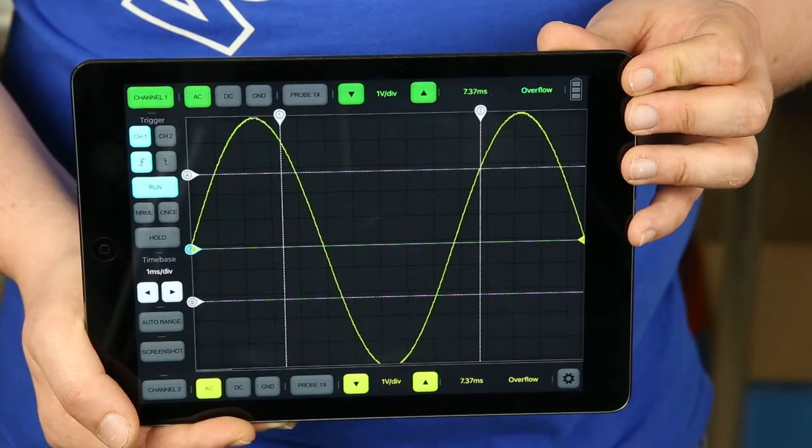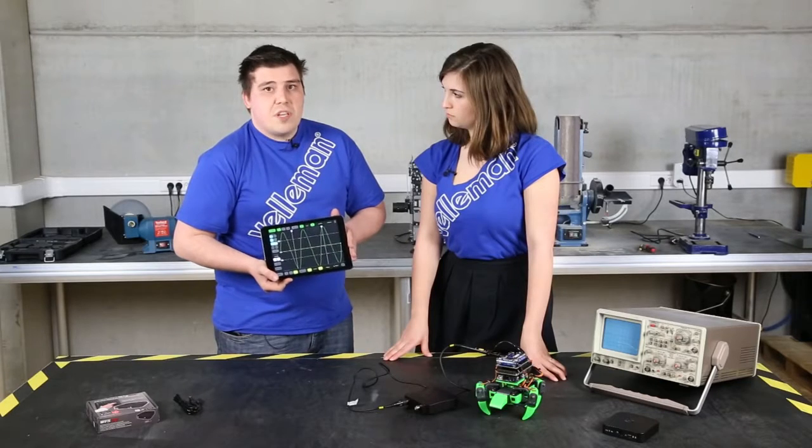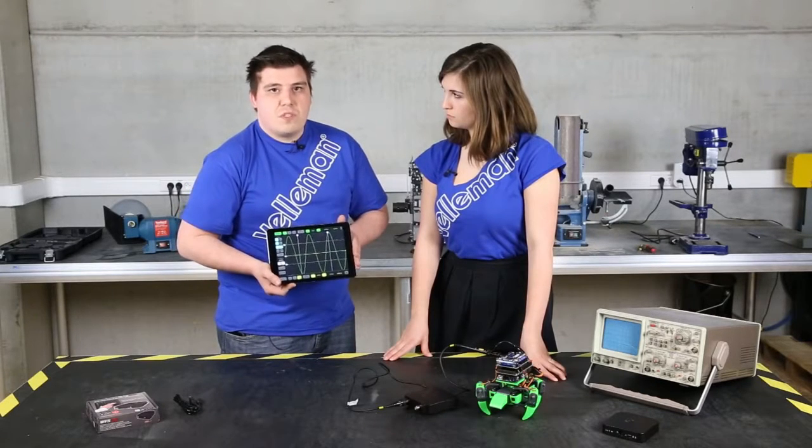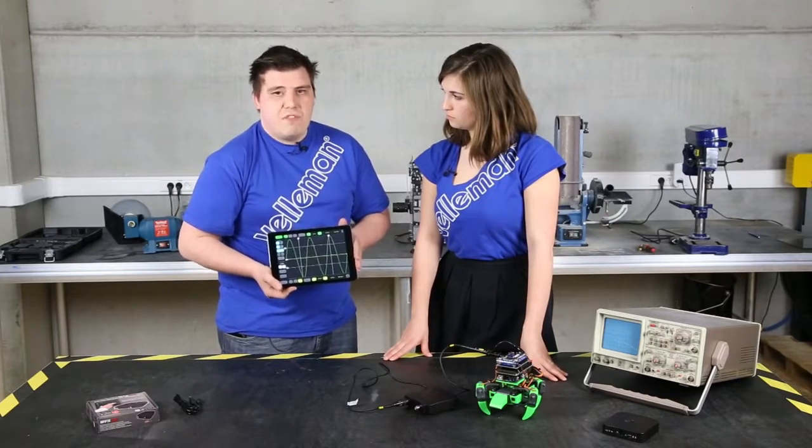A great feature of the oscilloscope is it has two channels, so you can compare two channels at the same time and analyze them. The input section goes as high as 20 volts per division and as low as 5 millivolts.